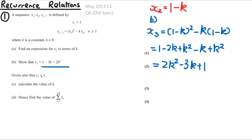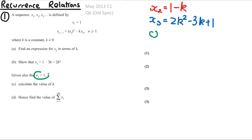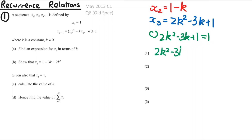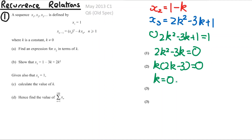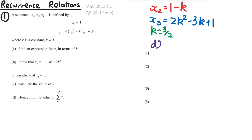For part (b), we show that x3 equals the given expression. Substituting x2 = 1 − k into the formula: x3 = (1−k)² − k(1−k) = 1 − 2k + k² − k + k² = 2k² − 3k + 1, which matches what's required.